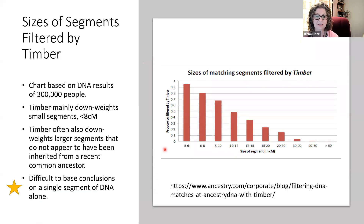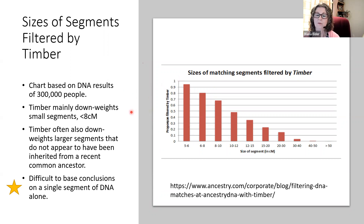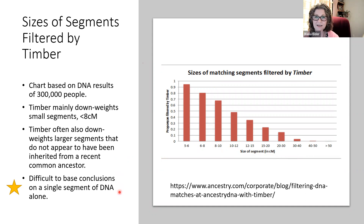In the white paper you'll see a chart based on DNA results of 300,000 people, giving you an idea of the size of segments filtered by Timber. 'Filtered' means they're not removed — they're just down-weighted. Most of them are under eight centimorgans, with some between eight and ten centimorgans. Notice on this chart that Timber also down-weights larger segments that don't appear to have been inherited from a recent common ancestor. The key point is that it's difficult to base conclusions on a single segment of DNA alone — this is all based on statistics, so we want to be careful and always question any hypotheses based on segments.